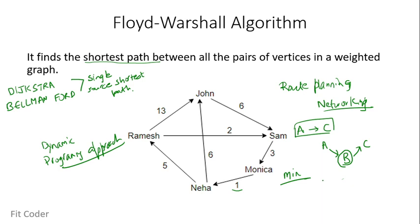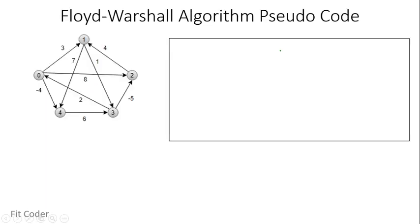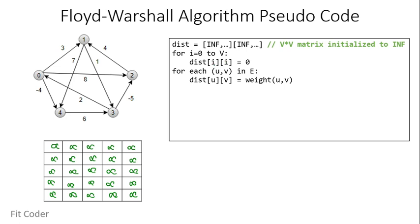Now let's look at the pseudo code. The data structure we use is a 2D array 'distance' of size V×V, with all elements initialized to infinity. We draw this 2D array. Then we have a for loop from i=0 to V, setting distance[i][i] = 0 — meaning all diagonal elements are 0, because the distance from a vertex to itself is 0. Then, in another for loop, for each edge in all edges, we initialize the distance matrix with the weight of that edge.